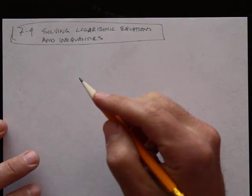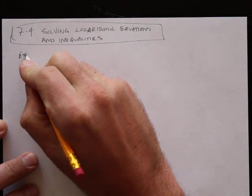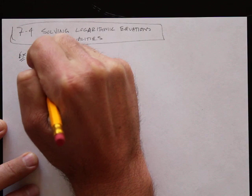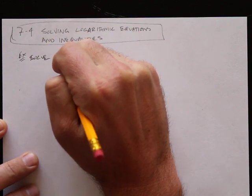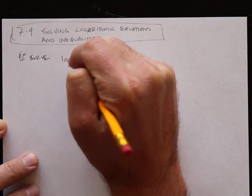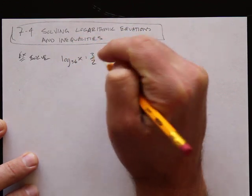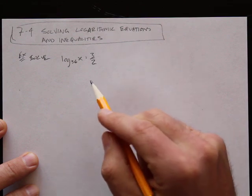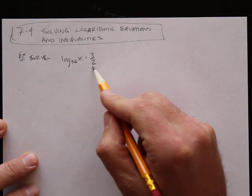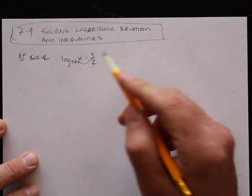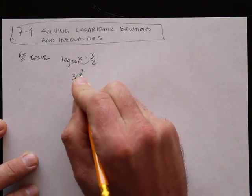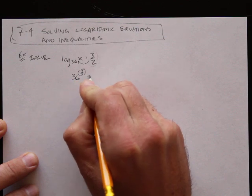We're going to start right into an example. Solve: log base 36 of x equals 3 over 2. I'm solving for x, so I'm going to take this 3 over 2 and jam it up in here. I end up with 36 to the power of 3 over 2 equals x.